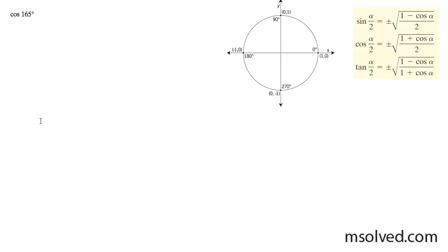We want to find the exact value of the cosine of 165 degrees. What we can do to find that is we do know the value offhand for what double that is, or the cosine of 330 degrees.